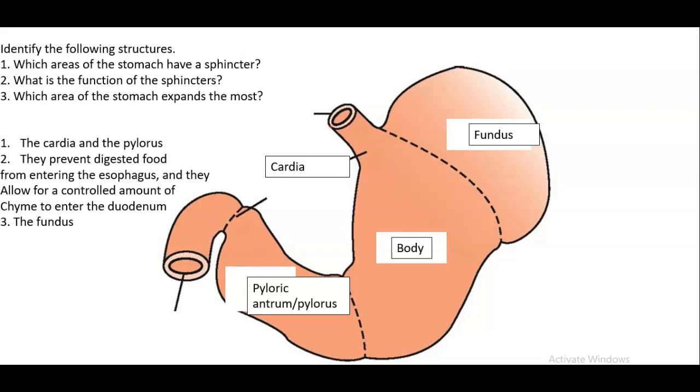Okay identify the following structures. So we've got the fundus, the body, this is the cardia region, this is the pyloric antrum which you can refer to as the pylorus.